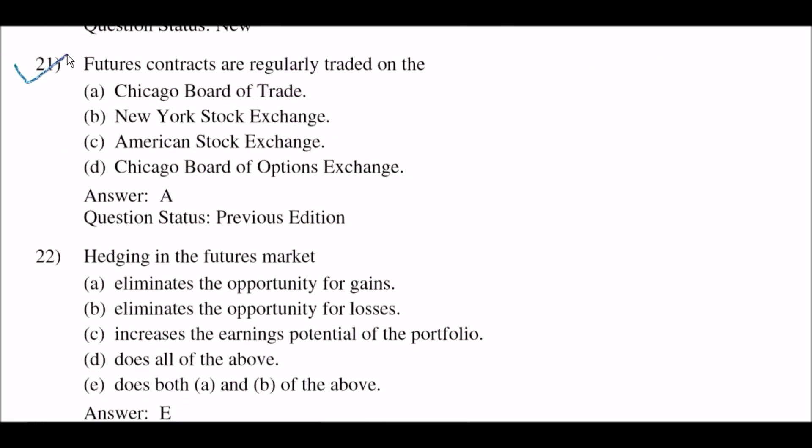Next question: futures contracts are regularly traded on the — option A: Chicago Board of Trade; option B: New York Stock Exchange; option C: American Stock Exchange; option D: Chicago Board of Option Exchange. The right answer is option A: Chicago Board of Trade.